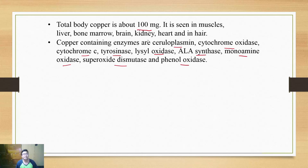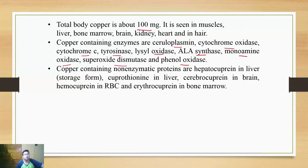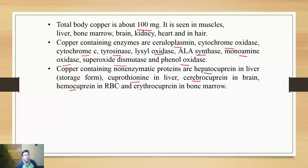There are a few non-enzymatic proteins that contain copper. Those are not important for you to remember, but the names are actually easy. Depending on the site, you simply add 'cuprine': hepatocuprine in liver, cuprothionein also in liver, cerebrocuprine in brain, hemocuprine in RBC, and erythrocuprine in bone marrow.